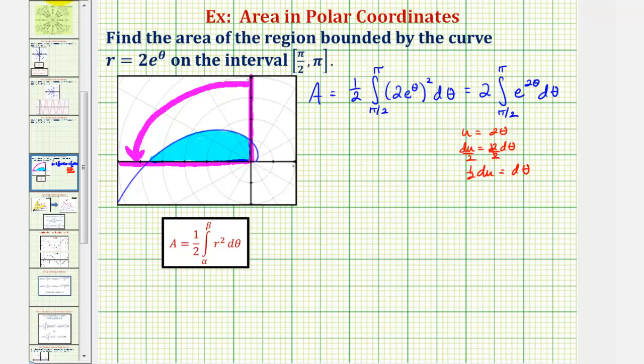If we write this in terms of u, we would have two times the integral of e to the u, but d theta is equal to one-half du. So let's factor out the one-half.